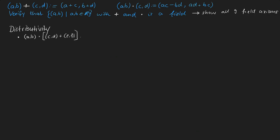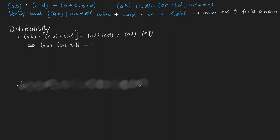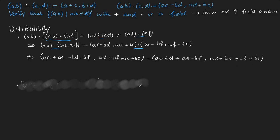The last axiom to prove is distributivity, which states that (A,B) multiplied with ((C,D)+(E,F)) is the same as (A,B)×(C,D) plus (A,B)×(E,F). Since we have already shown multiplication is commutative, we only need to prove one direction. After applying the addition on the left and multiplications on the right we compare terms: AC, AE, −BD, and −BF appear on both sides in the first element, and AD, AF, BC, and BE appear in the second element. The distributivity axiom is thus verified.